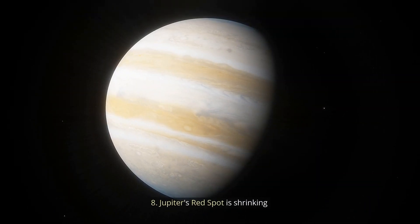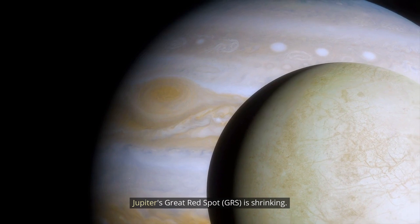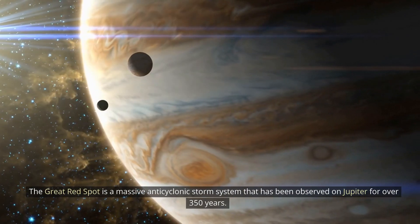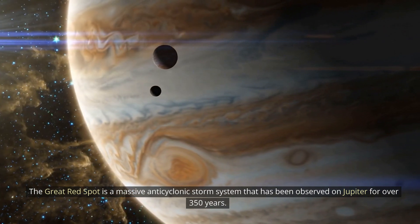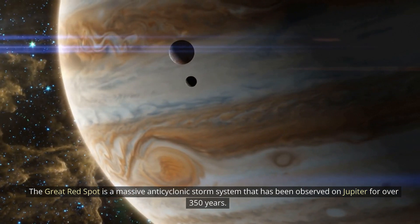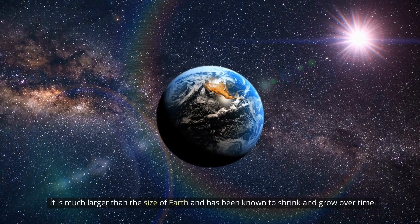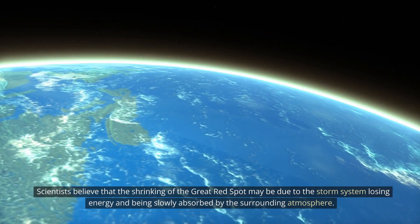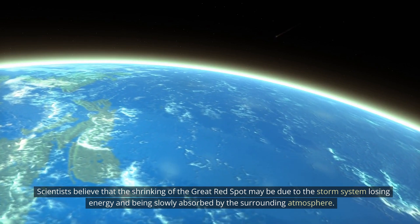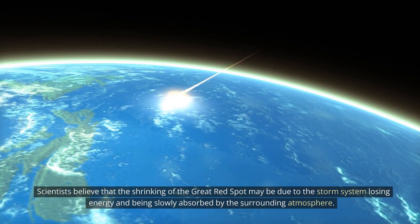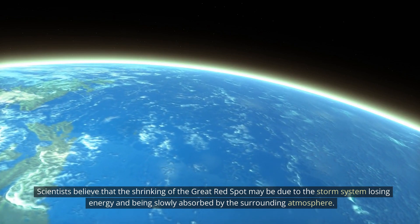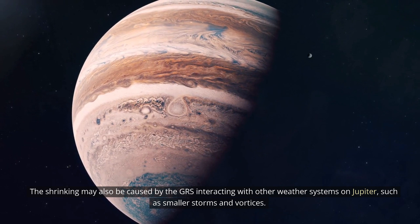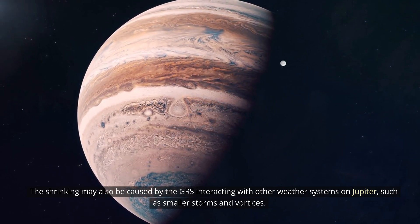8. Jupiter's Red Spot is shrinking. Jupiter's Great Red Spot (GRS) is shrinking. The Great Red Spot is a massive anticyclonic storm system that has been observed on Jupiter for over 350 years. It is much larger than the size of Earth and has been known to shrink and grow over time. Scientists believe that the shrinking of the Great Red Spot may be due to the storm system losing energy and being slowly absorbed by the surrounding atmosphere. The shrinking may also be caused by the GRS interacting with other weather systems on Jupiter, such as smaller storms and vortices.